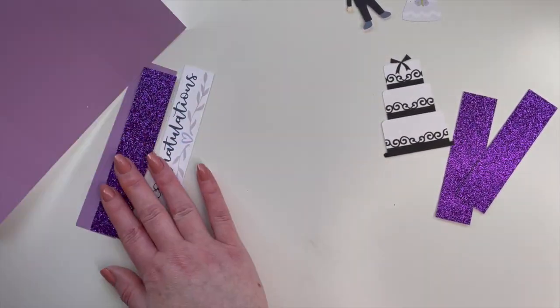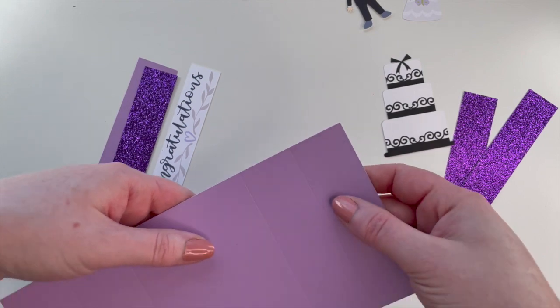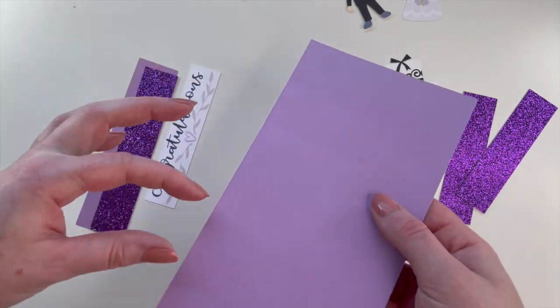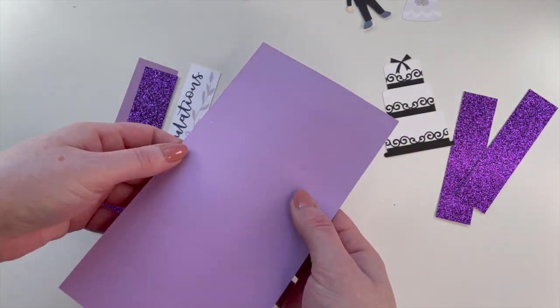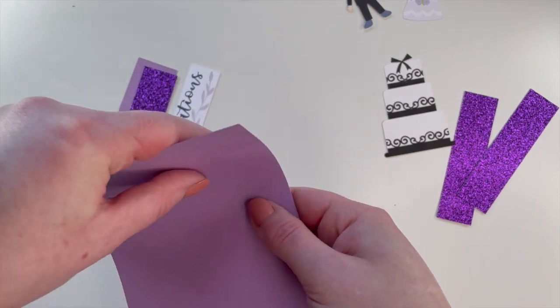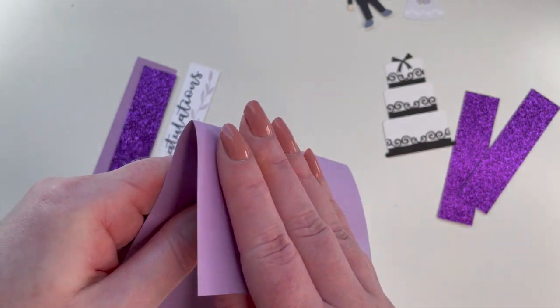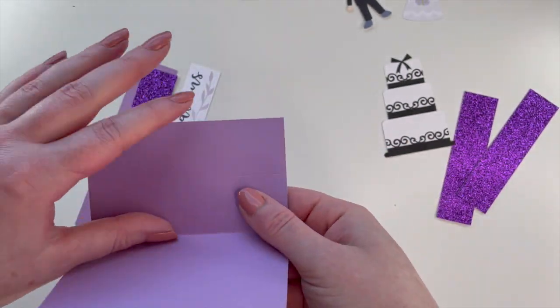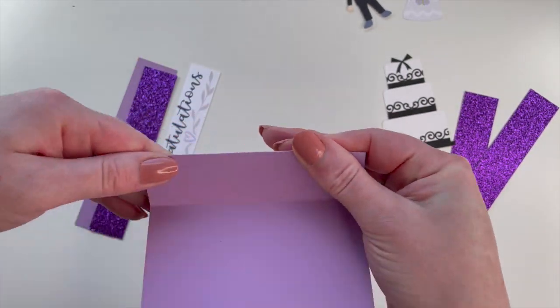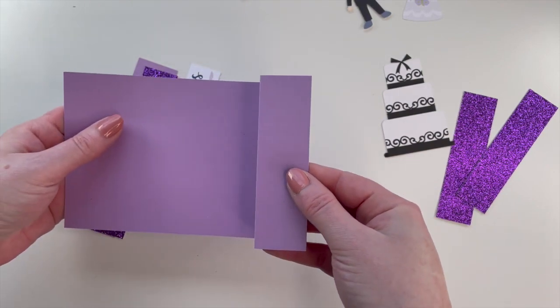Let's get our folds put in. So two score lines on either side of the main part of the card, you fold inwards and you fold outwards so it ends up like that.